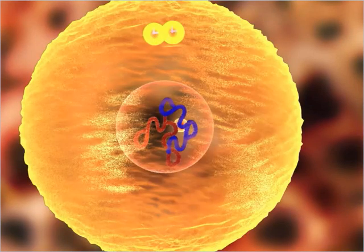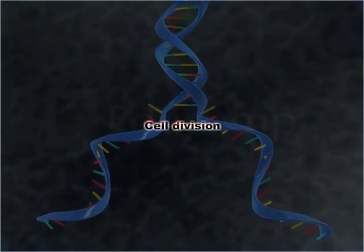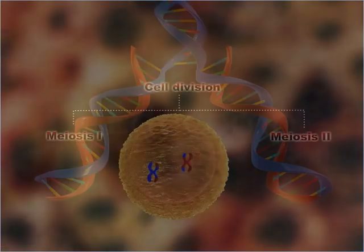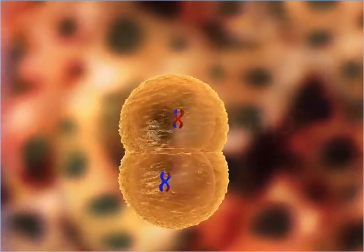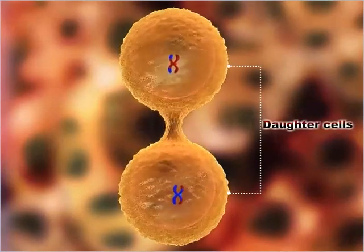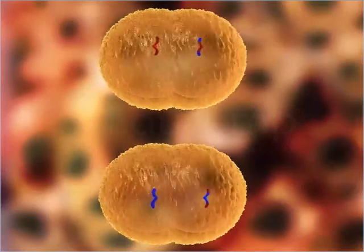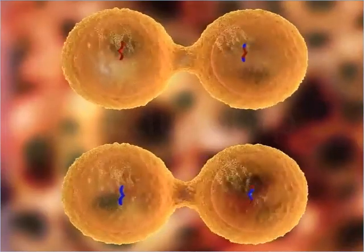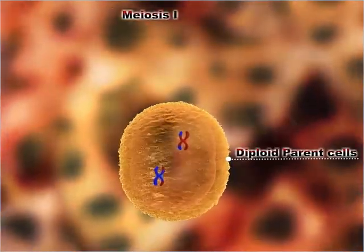Meiosis involves a single round of DNA replication followed by two cell divisions: meiosis one and meiosis two. The entire process of meiosis results in the formation of four haploid daughter cells with half the chromosome number as that present in the diploid parent cell. However, after fertilization occurs, the chromosome number gets restored.